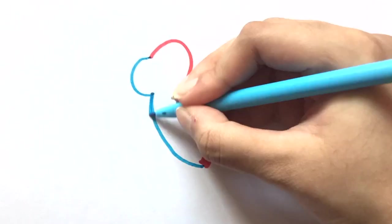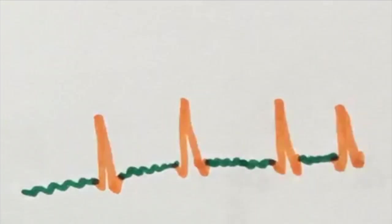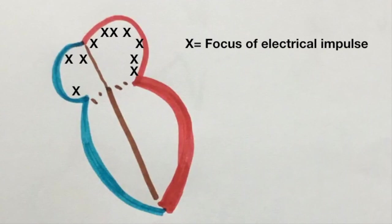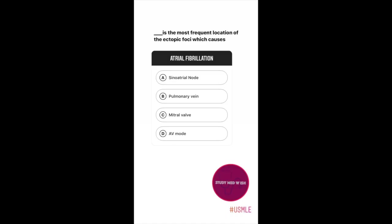Atrial fibrillation and atrial flutter are pathologies involving the atrium. So the QRS complex will look relatively normal. In atrial fibrillation, there are multiple foci which generate electrical impulses. These impulses drive the atrium crazy and it beats very fast and irregularly. The most common source of these foci is the pulmonary vein.